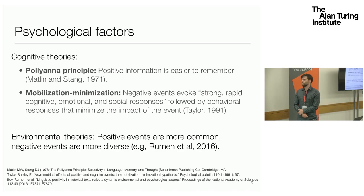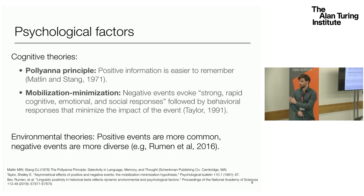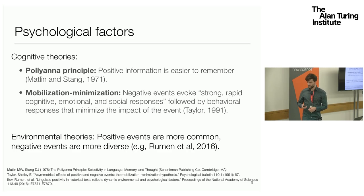Distinct from these cognitive theories, there's also just the idea that maybe this asymmetry — this idea of negative language being more differentiated — is simply because there is a greater diversity of negative events in our lives, but positive events are more frequent. This is the environmental theory, advanced by Ruman et al. in a PNAS paper from 2016, which is the paper being referred to where our words reflect our own awful reality.